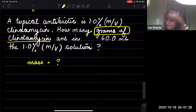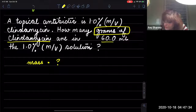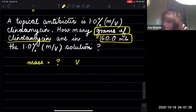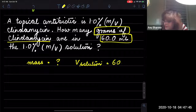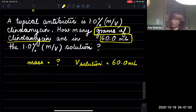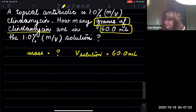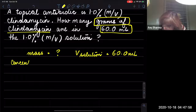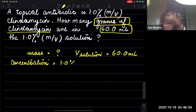The next thing we are given is the volume of the solution, which is 60.0 milliliters. Now the next very important thing that is given is the concentration. The concentration is 1.0% mass by volume.